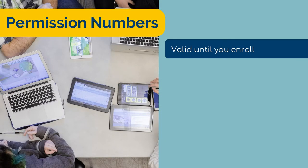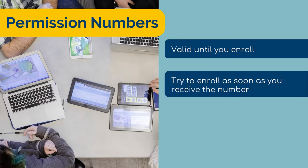A permission number is still valid up until you successfully enroll in the class. You can input the number into a class that is currently resting in your shopping cart, and the code will still be valid even if you actually enroll days later. We encourage you to enroll in the class as soon as you receive the number. Sometimes permission numbers expire after a specific date, and the advisor or instructor who gives you the permission code should explain any limitations.